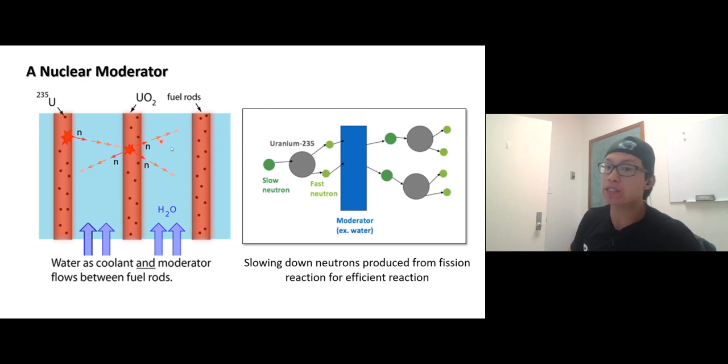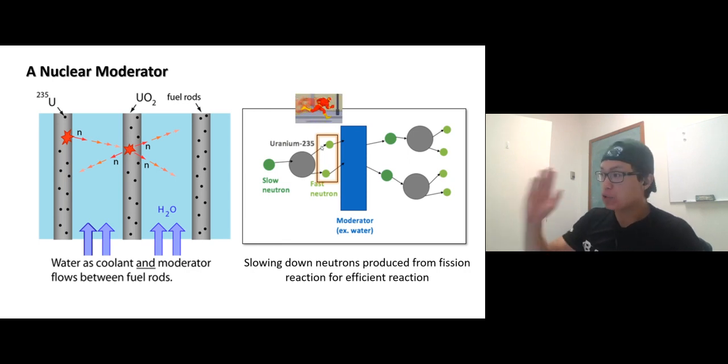The neutrons are high in energy, running real quick trying to hit another uranium to sustain the nuclear fission. This is the problem why we can't control it—these neutrons are too high in energy.